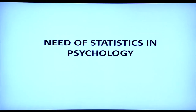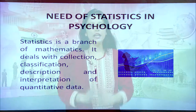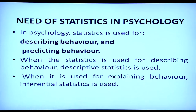Let's move to the next objective: the need for statistics in psychology. Statistics is a branch of mathematics. It deals with collection, classification, description, and interpretation of quantitative data — that is, it deals with numbers. In psychology, statistics is used for describing behavior and predicting behavior. When statistics is used for describing behavior, it is known as descriptive statistics. When it is used for explaining behavior, inferential statistics is used.